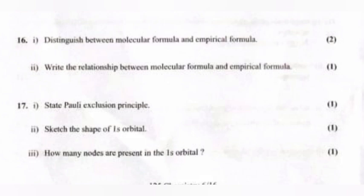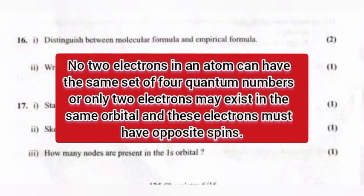Question 17: 1. State Pauli exclusion principle. 2. Sketch the shape of 1s orbital. 3. How many nodes are present in the 1s orbital? Answer: 1. No two electrons in an atom can have the same set of four quantum numbers or only two electrons may exist in the same orbital and these electrons must have opposite spins.